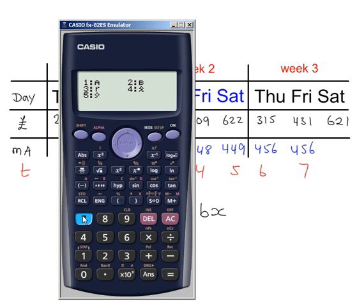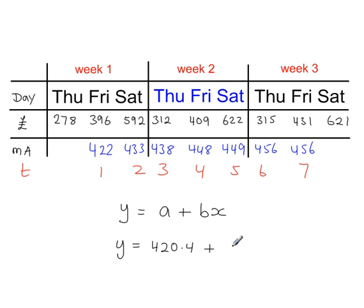And then shift, 1, regression, b. Make sure you press equals. That's not the value of b. 5.679 times x. Make sure you put the x there. That's the equation of the line that we need to plot on the graph.